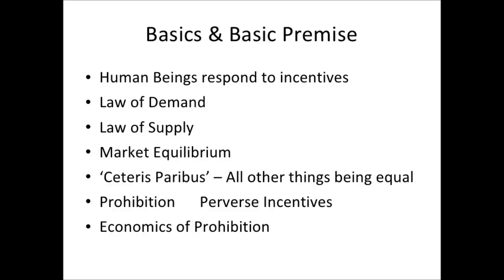This is the underlying proviso of economics — all things being equal — and you have to include this with every model you produce. It's our simplification. And I think prohibition is where this really comes in: it really undermines this notion of market equilibrium. It throws everything into disarray. Normal market forces aren't allowed to actually interact as they normally would, and it creates this perverse incentive structure.